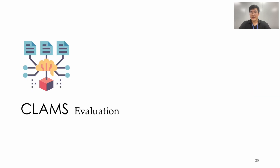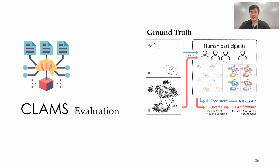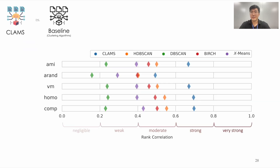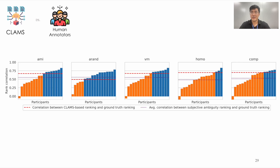You may be curious about the performance of CLAMS. To evaluate CLAMS, we first construct a ground-truth cluster ambiguity ranking of scatterplots through a human experiment. As discussed earlier, we asked participants to perform visual clustering and then evaluated the variability of the clustering results. We then checked how well CLAMS estimates the ranking, comparing the algorithm against automatic clustering algorithms and human annotators. CLAMS outperformed clustering algorithms in capturing cluster ambiguity, and interestingly, also outperformed more than half of the human annotators. Still, CLAMS failed to outperform all participants, raising the necessity of further improving CLAMS.